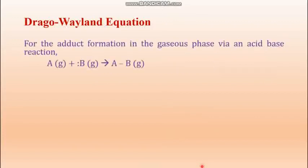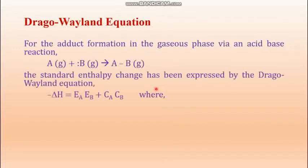Now, what is this equation? Let us take an acid A in the gaseous phase, and a base B also in the gaseous phase. When they combine with each other to form an adduct AB, also in the gaseous phase, the Drago-Wayland equation for calculating the enthalpy change is: minus delta H equals E_A times E_B plus C_A times C_B.